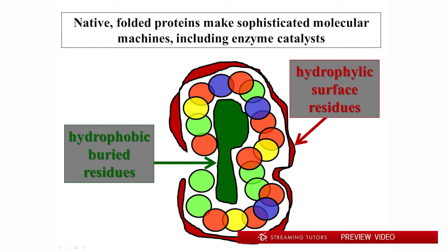Our larger purpose here is to understand the major class of molecular machines that make all of life, all of biochemistry possible. These are the molecular machines that execute catalysis. The fundamental point of catalysis is to allow the desirable reactions — the reactions that support the replication of the vehicle and the function of biological systems — to go blindingly fast, so fast that undesirable side reactions form a negligible component of biochemistry.